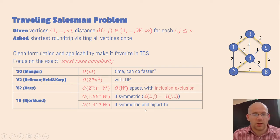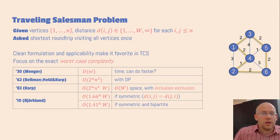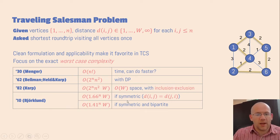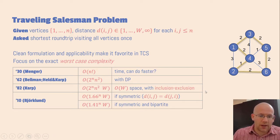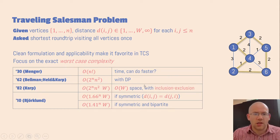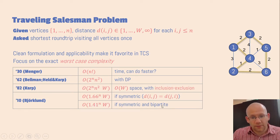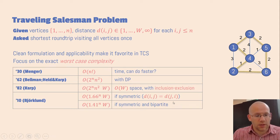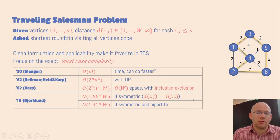In 2010 there was a significant breakthrough by Bjorklund. He showed that the problem can also be solved in 1.66 to the power n times capital W in the case that the distances are symmetric — that is, the distance from i to j equals the distance from j to i. As a stepping stone towards this result, he showed that if the underlying graph of finite distances is bipartite, then the problem can even be solved in square root 2 to the power n.